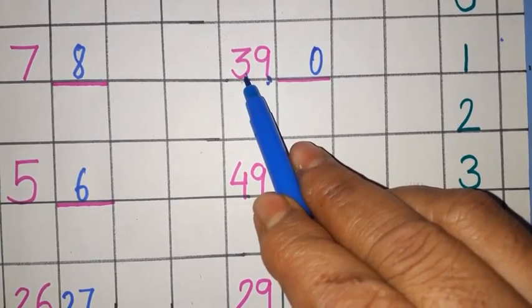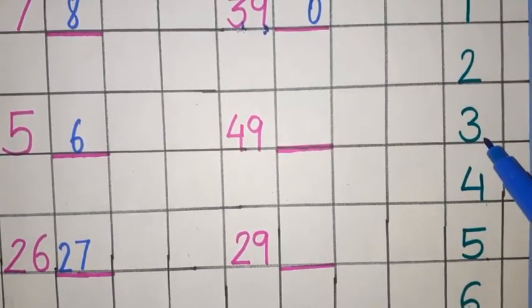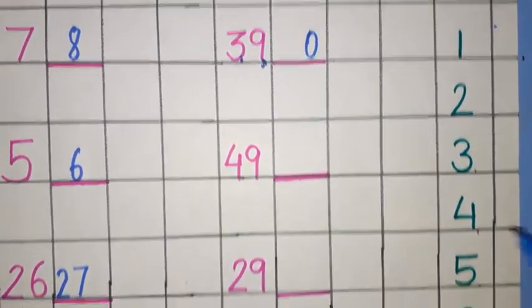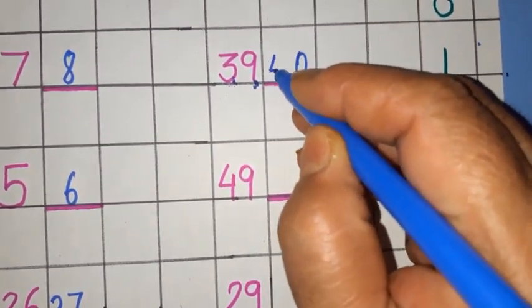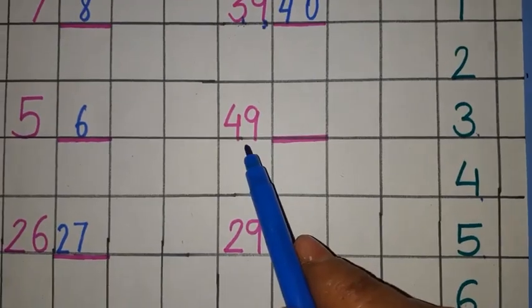For example, 3. What comes after 3? It is 4. So, write down here 4.